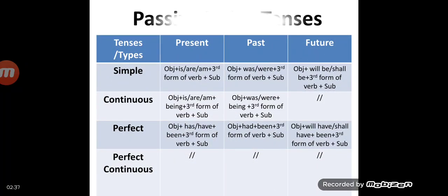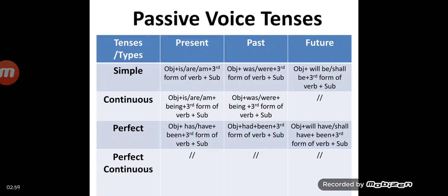Let's compare the rules of passive voice tenses using a complete table showing simple, continuous, perfect, and perfect continuous across present, past, and future. As you can see in the table, for future continuous and perfect continuous of all tenses — present, past, and future — there is no passive voice. So only eight tenses remain for which we can change active voice into passive: for present — simple, continuous, and perfect; for past — simple, continuous, and perfect; and for future — only simple and perfect tenses.